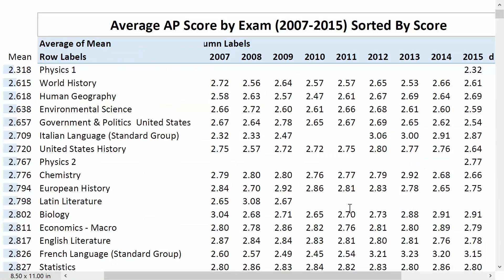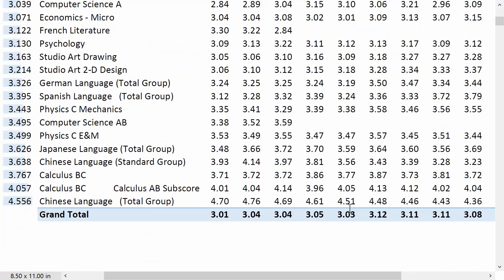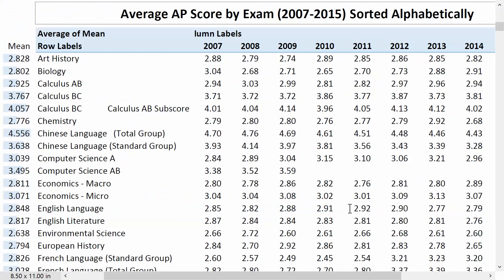Most people don't want to play around with the data — they just want to see it — so I've also made it into a PDF. Here are all the AP exams, with data from 2007 to 2015. On the left you'll see the actual mean out to three decimal places. First I have it sorted in order, then alphabetically. I'm going to scroll through here in case you just want to watch it in the video. First, sorted by AP score from lowest to highest — lowest is Physics 1 at 2.318.